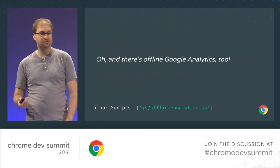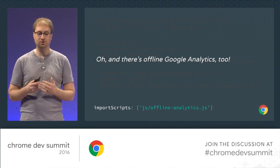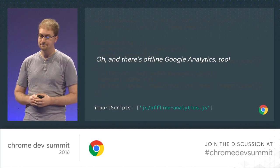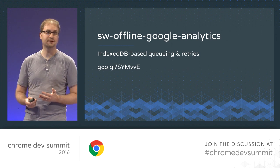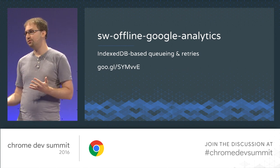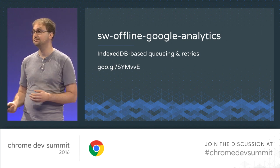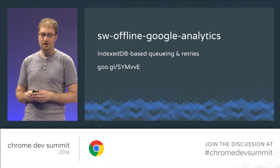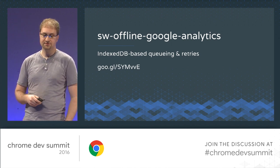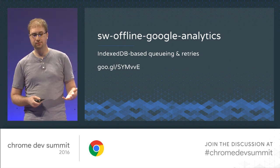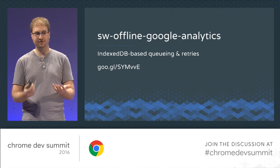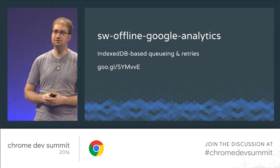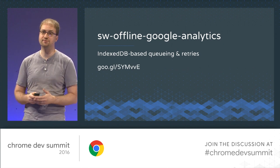They're also pulling in additional code: a library that automatically queues and retries Google Analytics hits that occur while the user is offline. This is SW Offline Google Analytics, which sets up fetch handlers that automatically queue any failed Google Analytics requests using IndexedDB. Failed requests are retried for up to a day — an interval that makes sense for Google Analytics — and they're retried whenever the service worker starts up. The library preserves the original event time automatically, meaning that assuming the request eventually makes it to Google Analytics when the device comes back online, the data has the correct timestamp attributed to it, so you don't lose the nuance about when an event actually happened.